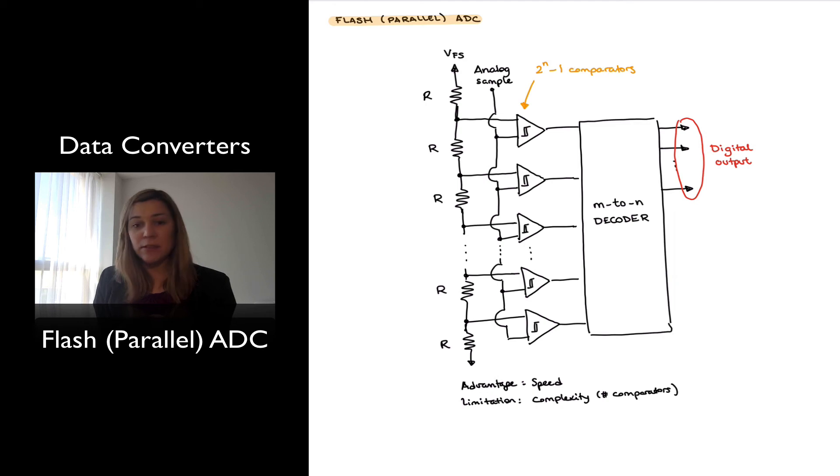For a 3-bit system, we just mentioned 2 to the N minus 1 will be 7 comparators. But for an 8-bit system, then we will have 2 to the 8 minus 1, which will be 255 comparators. For a 16-bit system, we have 2 to the 16 minus 1, which will be 65,535 comparators. So you can see that at some point it becomes impractical to operate with a Flash ADC.